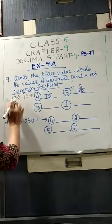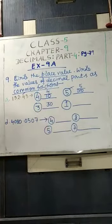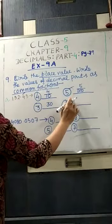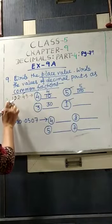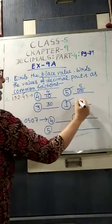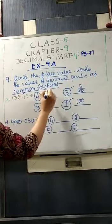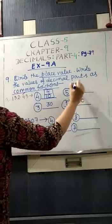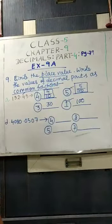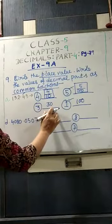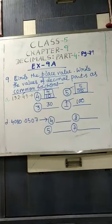So 3 is in tens place, 3 tens means 30. Clear? And the last digit is given as 1. 1 is in hundreds place before decimal, so you will write 100. So you can see the values of decimal parts as common fractions. I have written the decimal parts as common fraction: 4 by 10 and 5 by 100, and the whole numbers we have written by position.